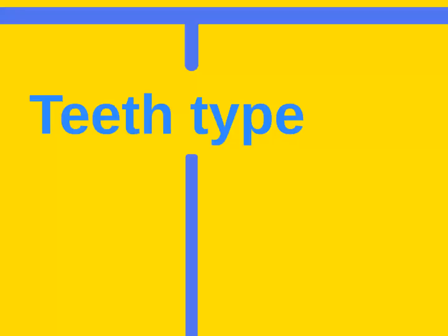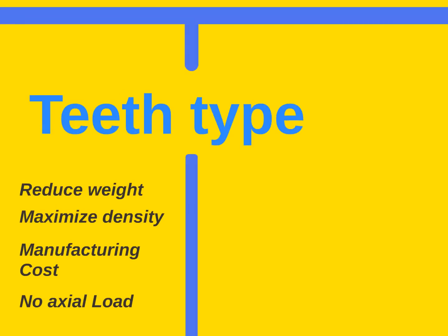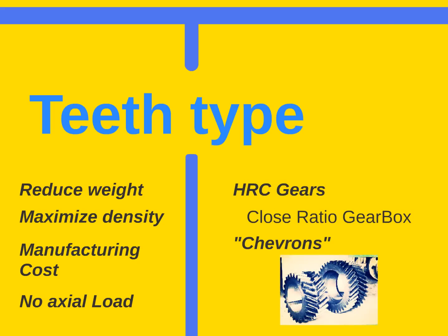Third step, teeth type. Here, the targets are to think about the manufacturing cost and not have any axial load to simplify the bearings. For now, two types of gearing will be looked: close ratio gears and double helical gears, also known as herringbone.